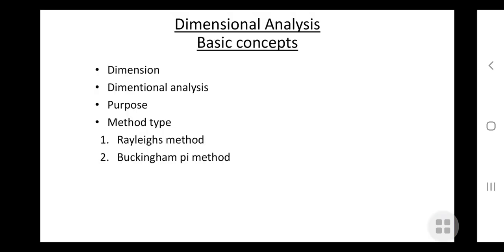Let's start with the basic definitions. Dimension is the measure of a physical quantity while the unit is the way to assign a number to that dimension.